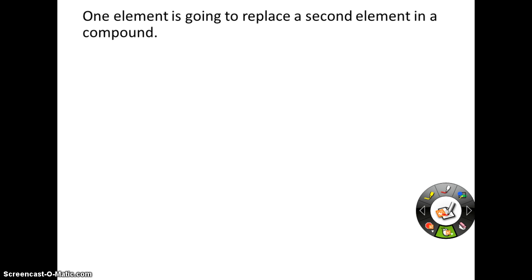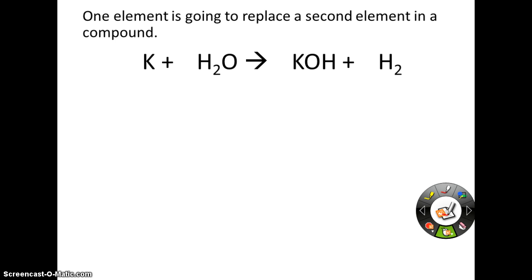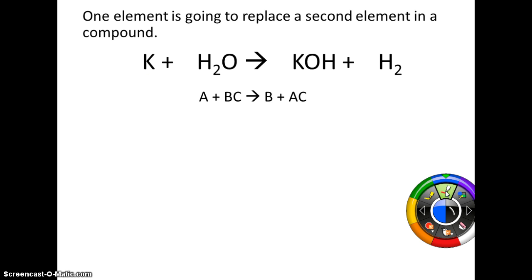With single replacement, you're going to have an element replace a second element in a compound. So if we look at a skeleton equation of potassium plus water, we're going to get potassium hydroxide plus hydrogen gas. Potassium is kind of a special case, but potassium is going to come in and kick off one of these hydrogens, so we're left with an OH group bonded to the potassium. And then since hydrogen got kicked off by itself and can't exist by itself — it's diatomic — we're going to get H₂.